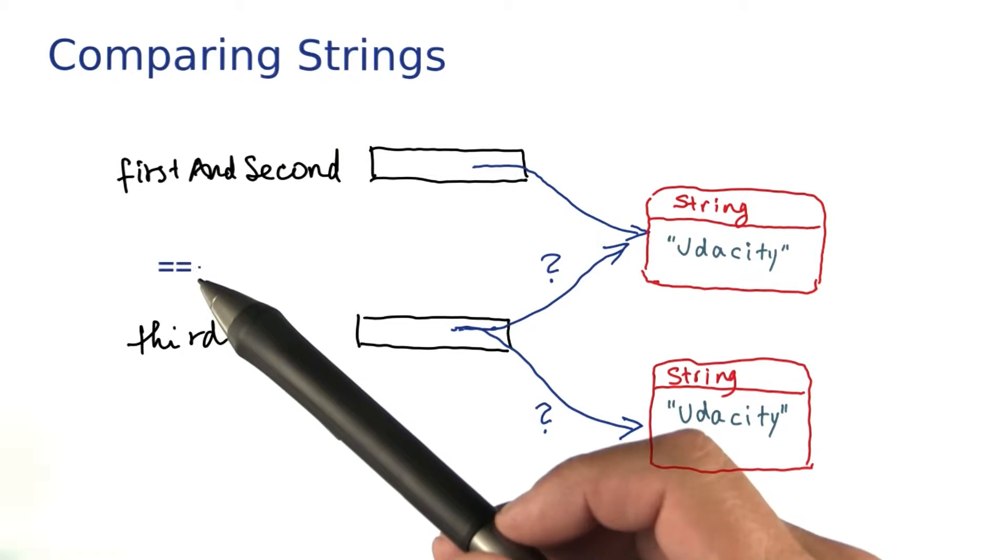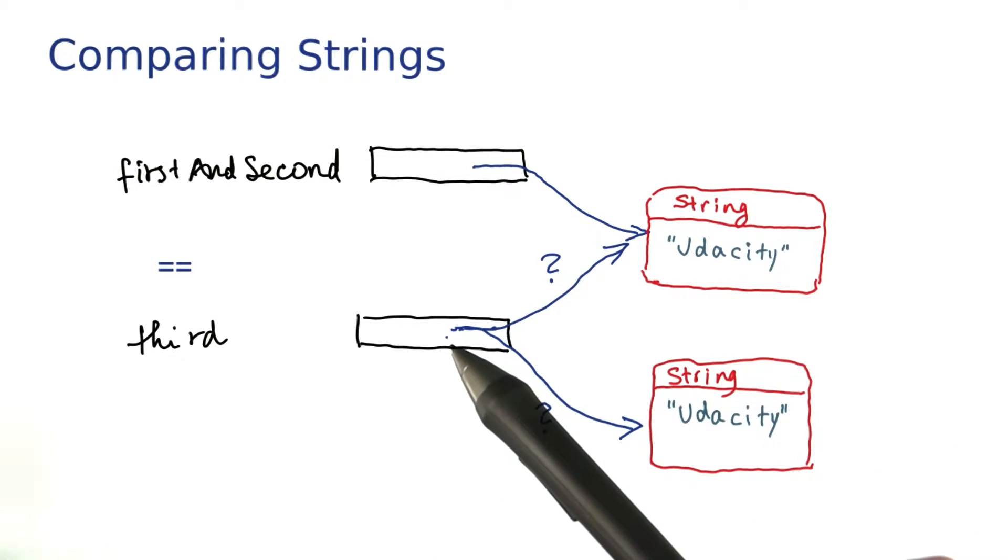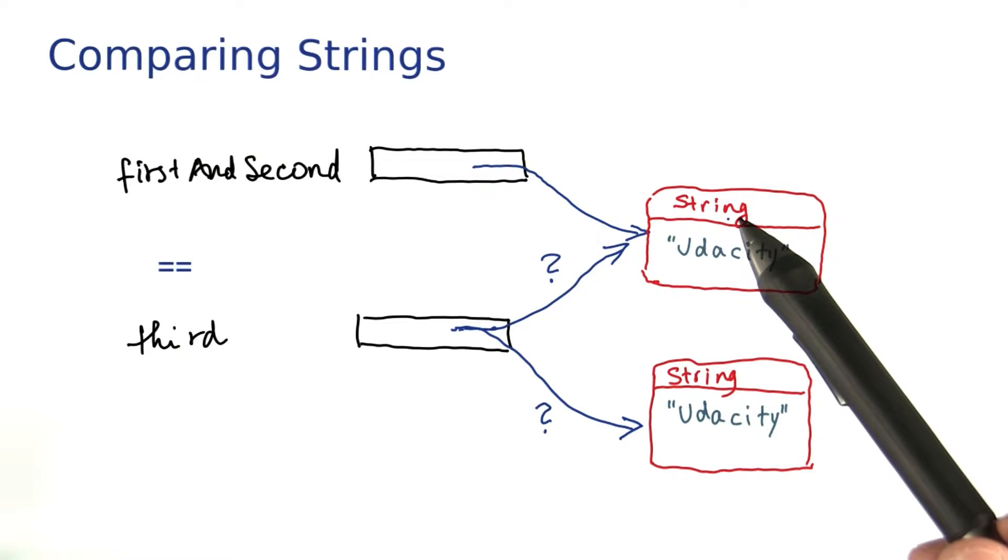The equal equal operator checks whether the contents of these two variables is exactly the same. In other words, whether both variables refer to the exact same object. Now actually, they don't.